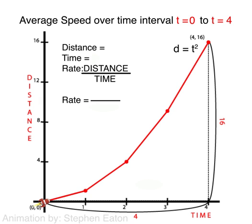For example, from time 0 to time 4, the change in distance is 16, while the change in time is 4. 16 over 4 is equivalent to 4 miles per minute.